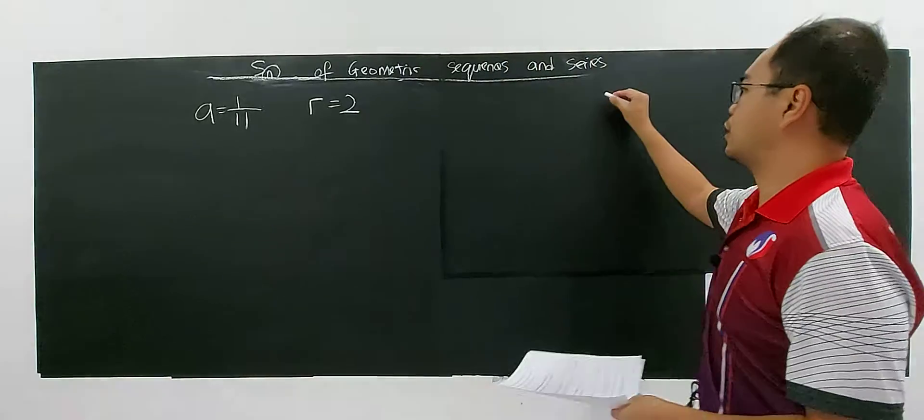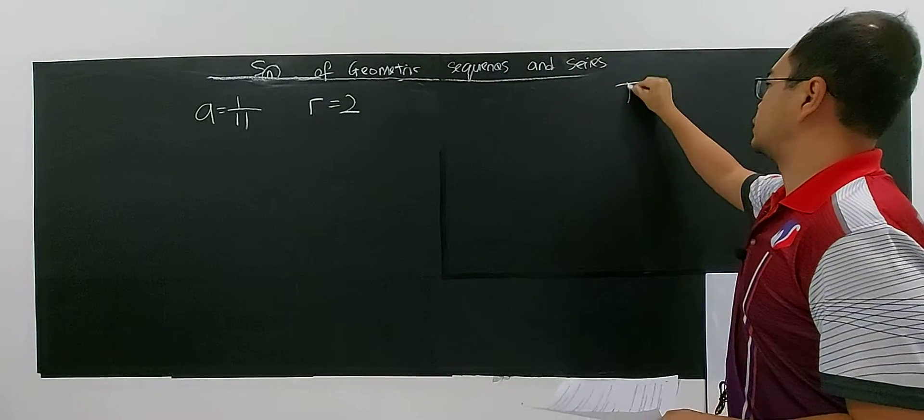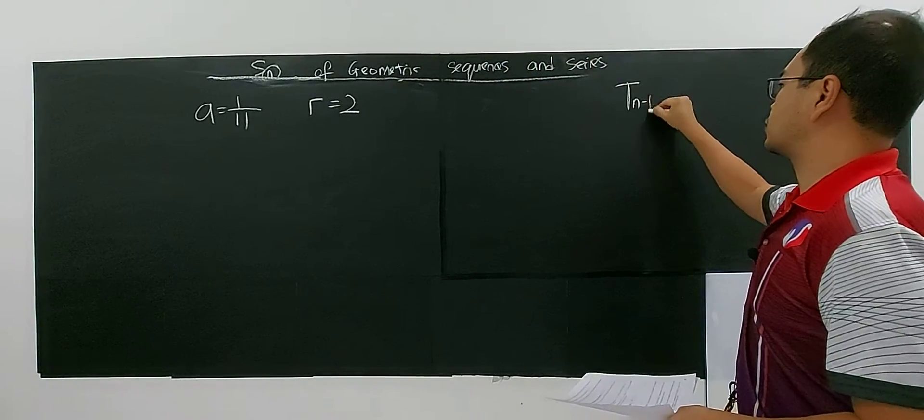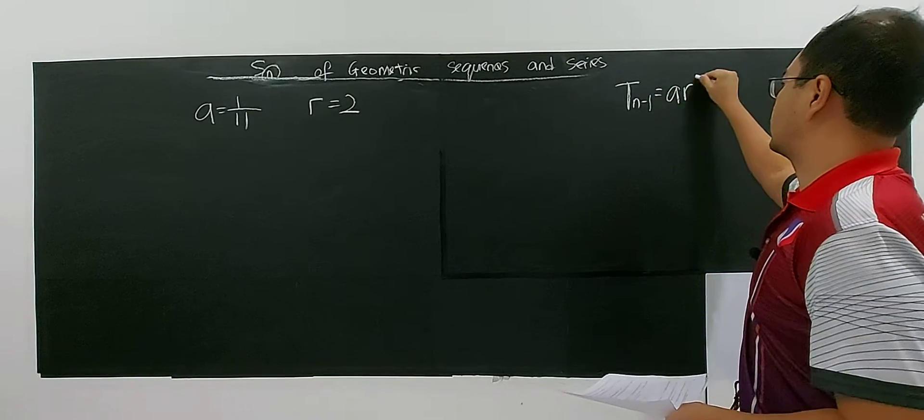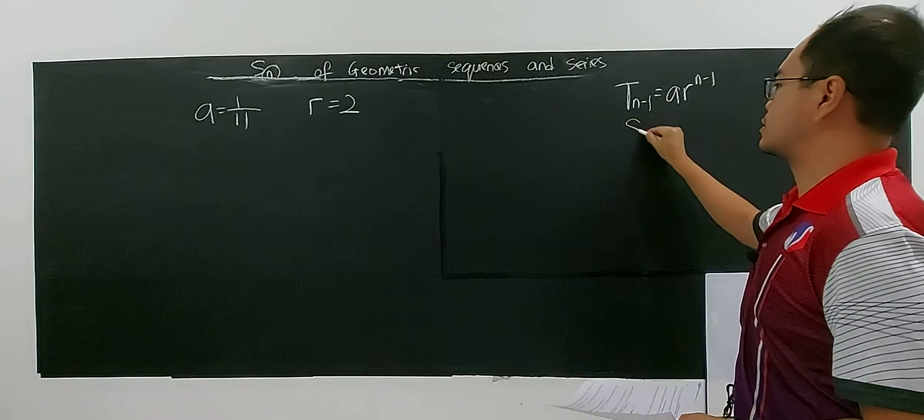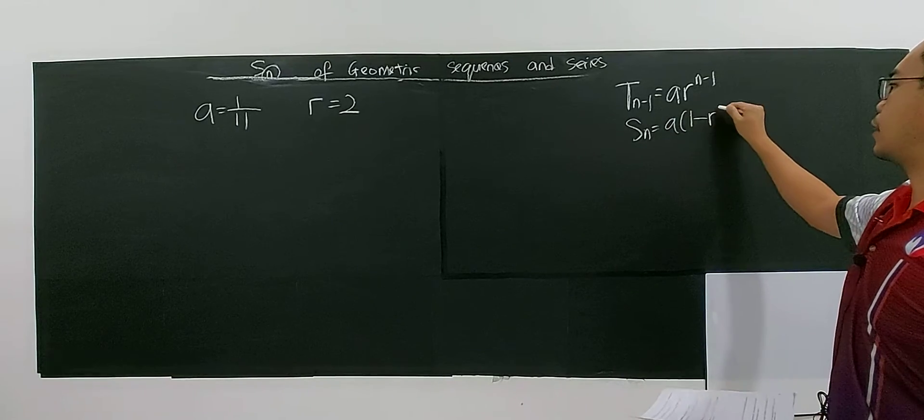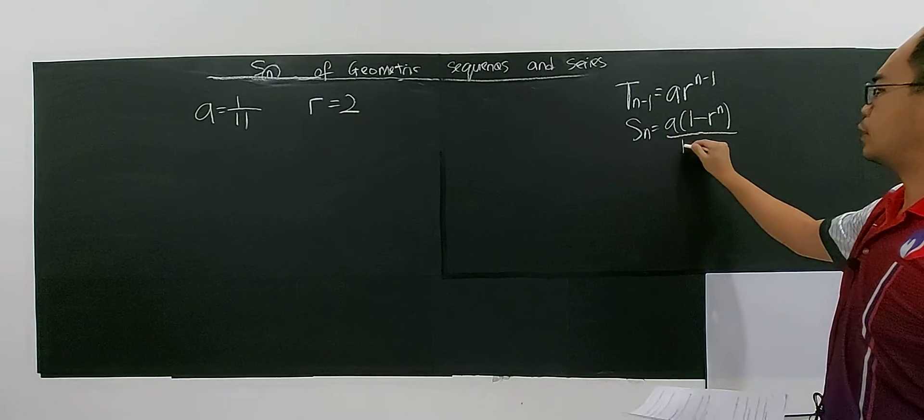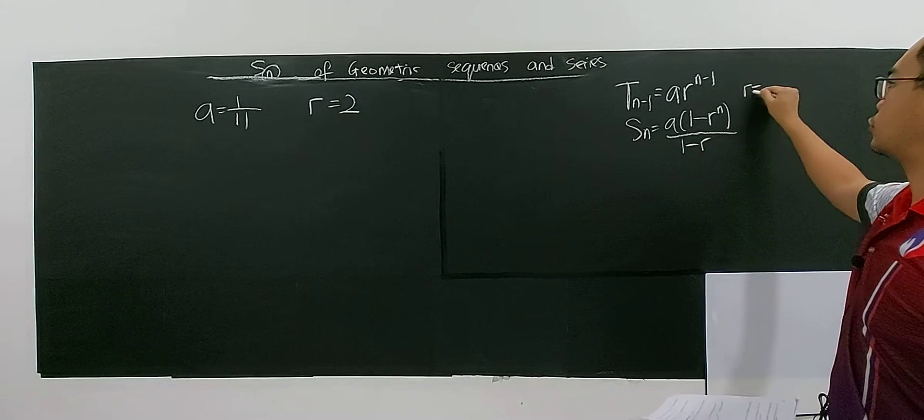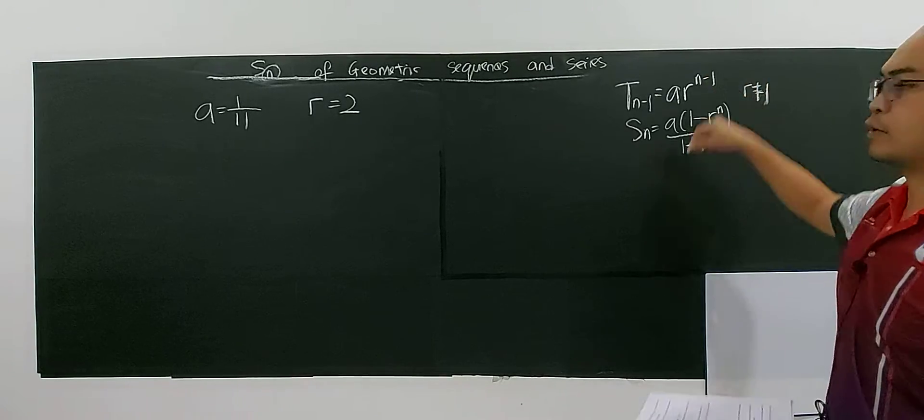The question has already said, so the formula must be TN equals A times r to the power N-1. If there is a sum, the formula will be SN equals A times (1 - r^N) divided by (1 - r), where r should not be 1 for both cases.